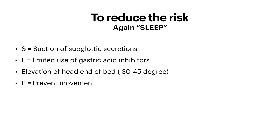And how to reduce the risk of VAP? Again, the mnemonic is SLEEP. S means continuous or intermittent suction of subglottic secretions to prevent pooling above the endotracheal cuff. L means limited use of gastric acid inhibitors to reduce the burden of microorganisms in gastric secretions. E means elevation of the head of the bed at 30 to 45 degrees to reduce retrograde movement of gastric secretions. And P means prevent movement of the endotracheal tube by minimizing patient transport.